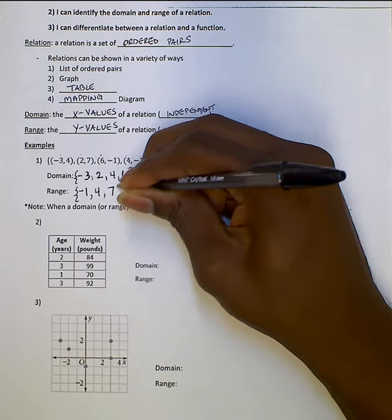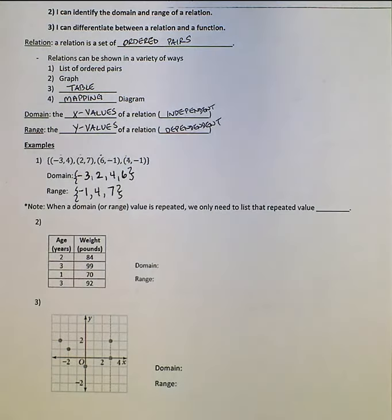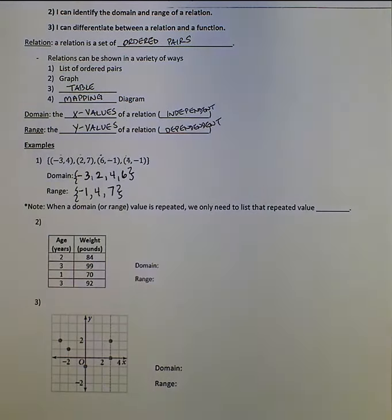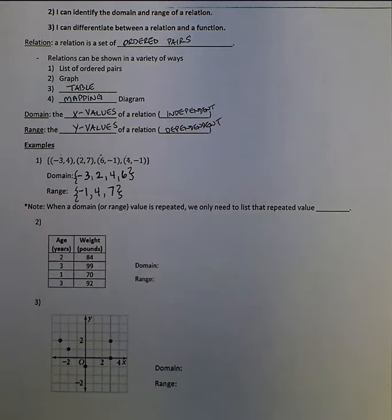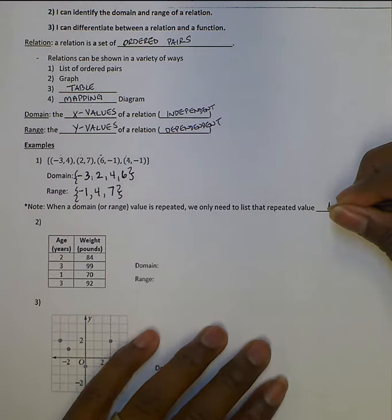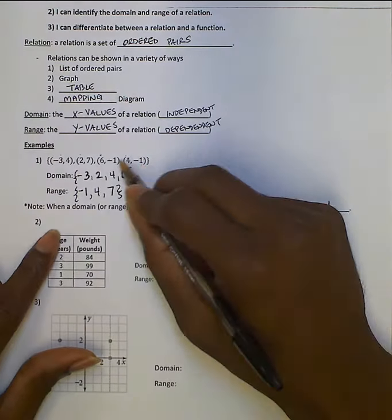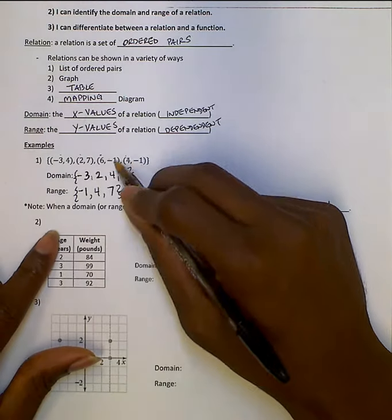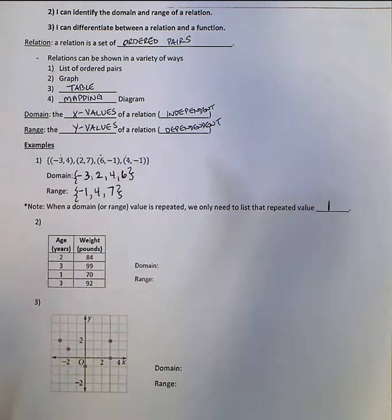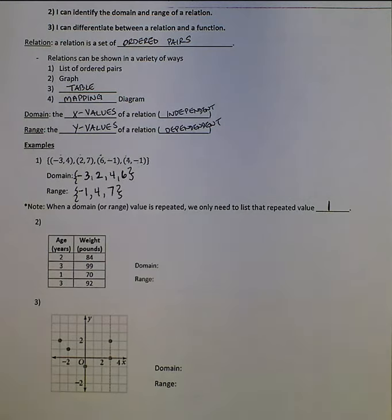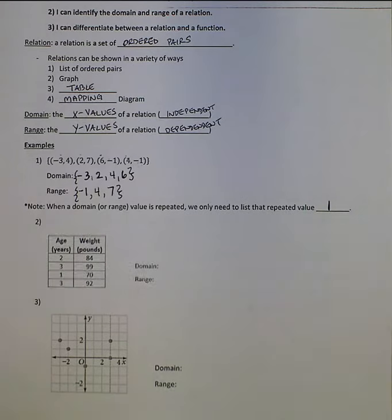When a domain or range value is repeated, we only need to write the repeated value once. Notice we have negative one twice for our y-values, but it's only written in the range once. So we see the domain and range in a set of ordered pairs; I'm going to do the same thing in a table and in a graph.